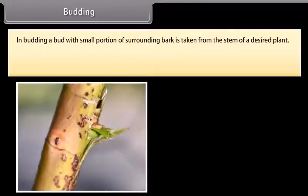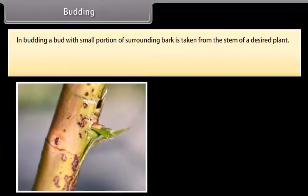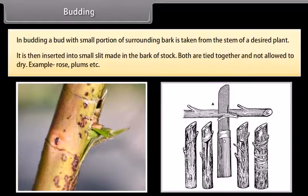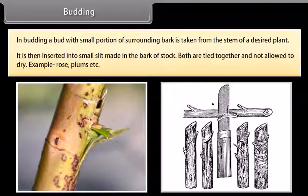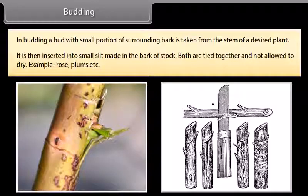In budding, a bud with a small portion of surrounding bark is taken from the stem of a desired plant. It is then inserted into a small slit made in the bark of the stock. Both are tied together and not allowed to dry. Examples include rose and plums.